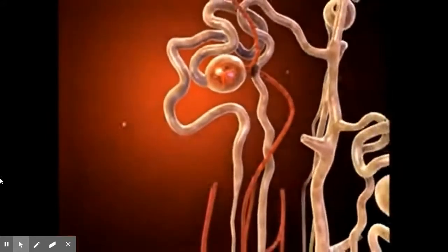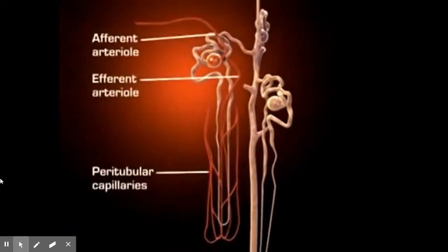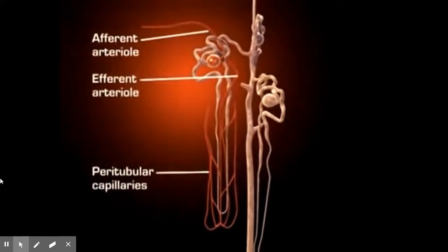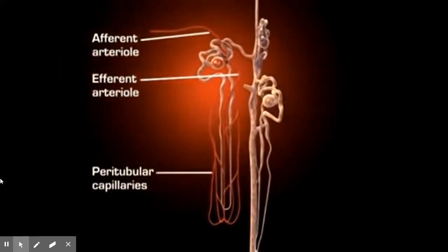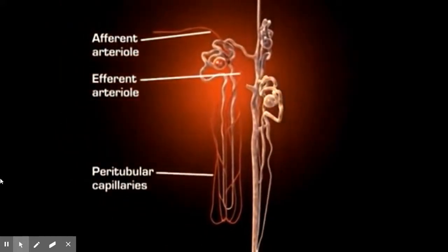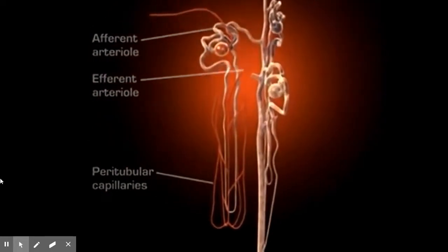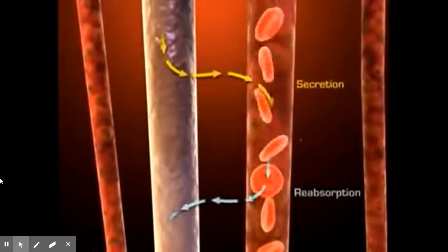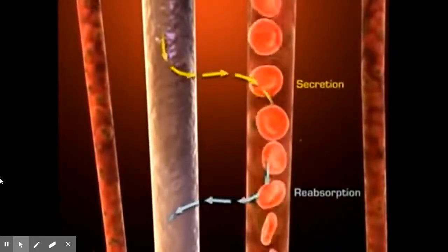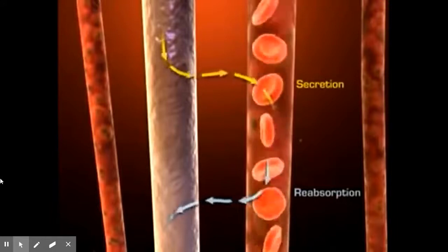The kidney's venous blood, now filtered, flows from the glomerulus via the efferent arterioles into the peritubular capillary network — a low-pressure, reabsorptive system surrounding all portions of the tubules. This arrangement permits rapid movement of solutes and water between the fluid in the tubular lumen and the blood in the capillaries.